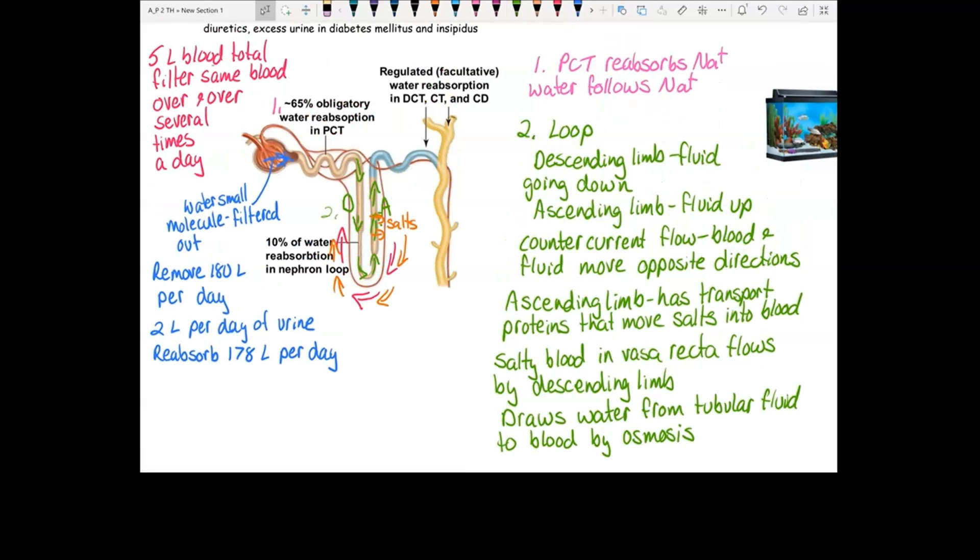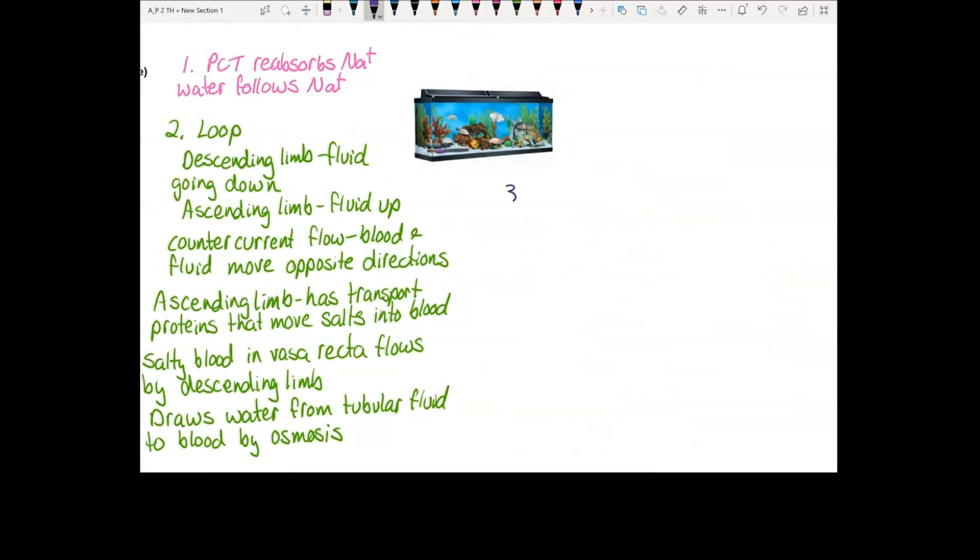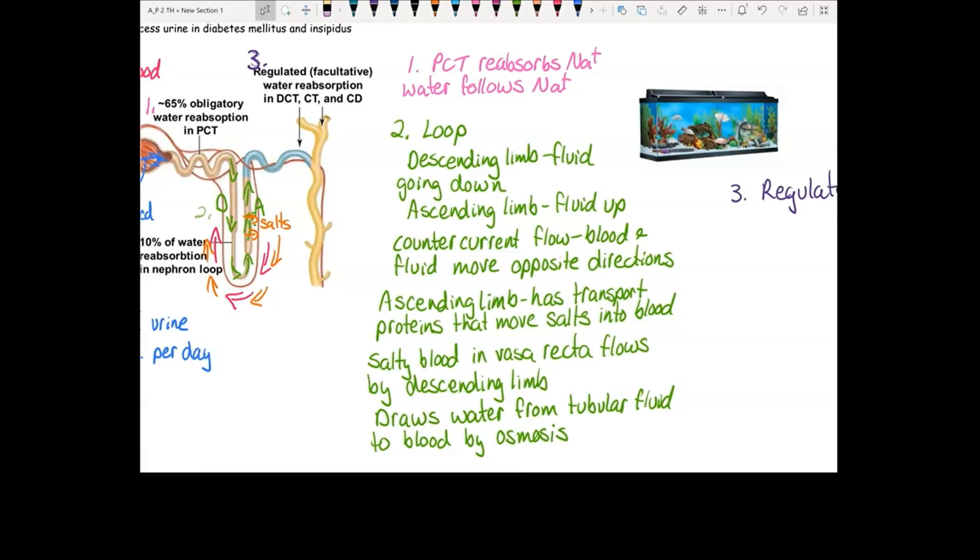Then the third method is over here, the regulated reabsorption. This is called regulated because hormones control it. And you can change the level of the hormones in order to change how much water you reabsorb here. Notice this occurs in the distal convoluted tubule, the collecting tubule, and the collecting duct. So it's all this area and this area where the hormones will act.